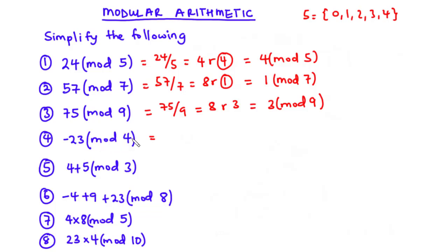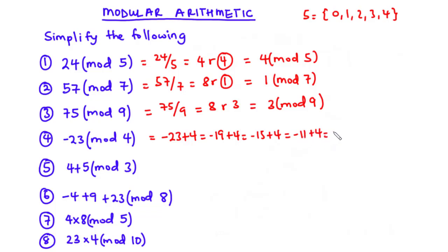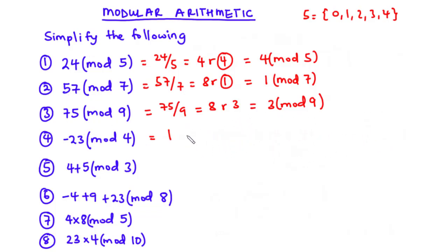Question 4: -23 modulo 4. For a negative number, we do not simply divide; instead we add the modulo value (4) to -23 repeatedly until we get a positive value less than 4. So: -23 + 4 = -19, + 4 = -15, + 4 = -11, + 4 = -7, + 4 = -3, + 4 = 1. Therefore -23 mod 4 equals 1.